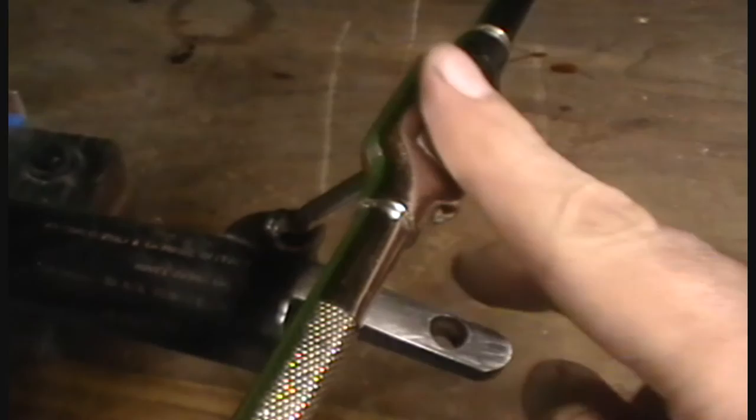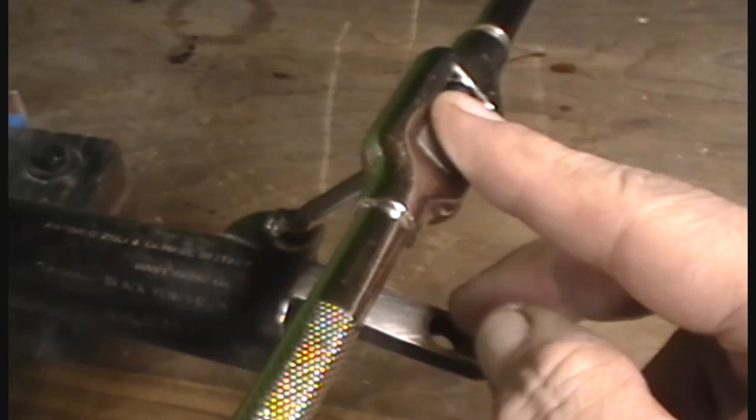And then I'm going to tap an easy out in here like I've done, get that down in there set real well as good as you can. And I use a tap wrench. You can use a crescent wrench, but I found a tap wrench works the best for this.